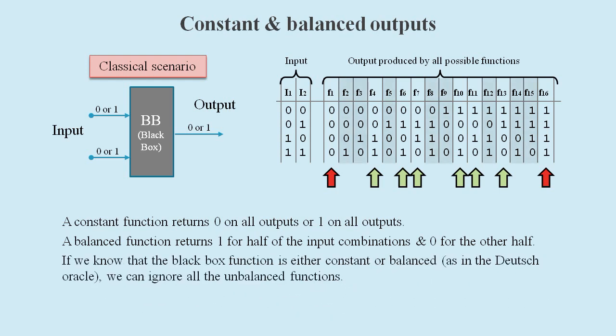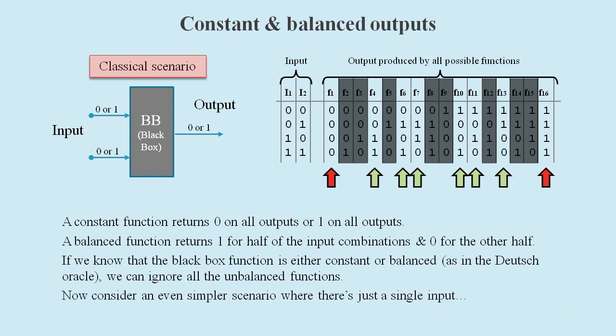In the Deutsch oracle we are told that our black box is either a constant or a balanced function, so we can ignore any unbalanced functions. Now let's simplify things even further and just have a single input to our black box.